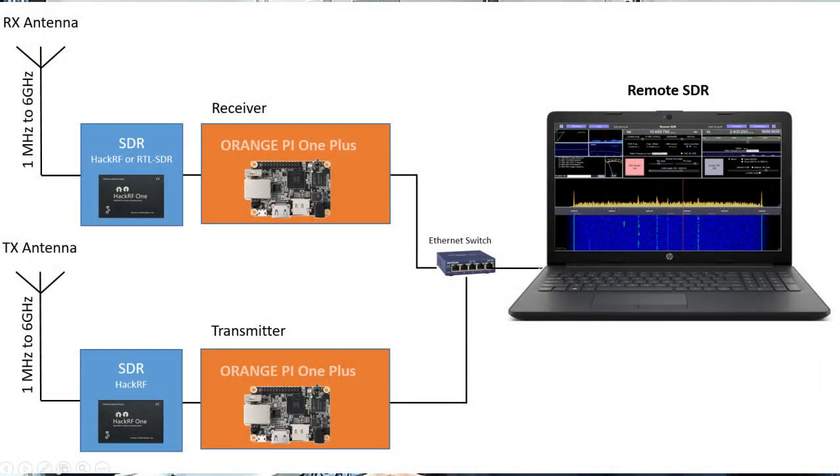The complete transceiver is managed from my office using a web browser. On one page, you have all the parameters to control the transmitter and the receiver. This system with the HackRF One SDR is able to work from 1 MHz up to 6 GHz. I use it daily to communicate on the amateur radio satellite QO-100.